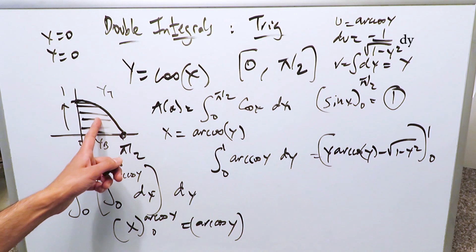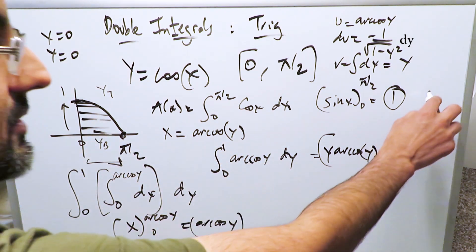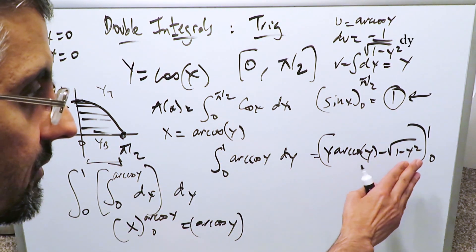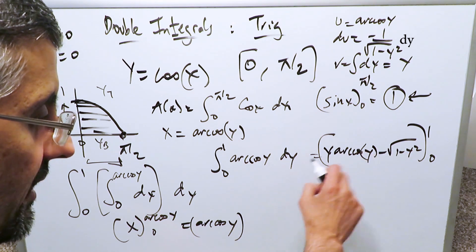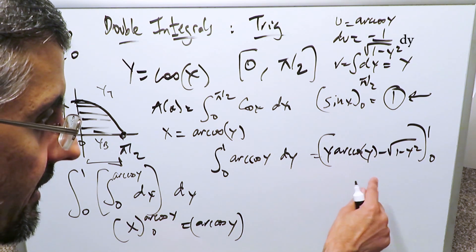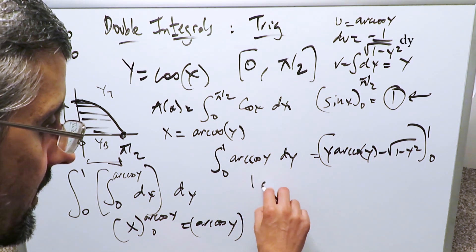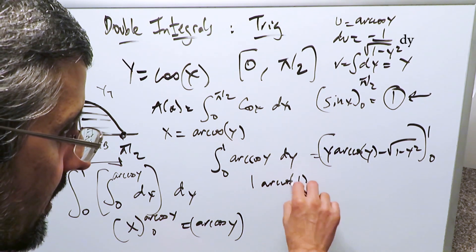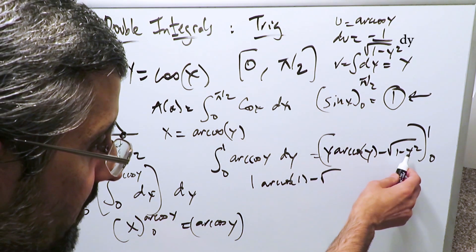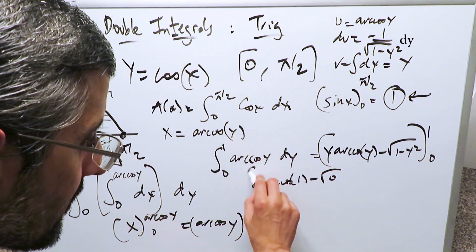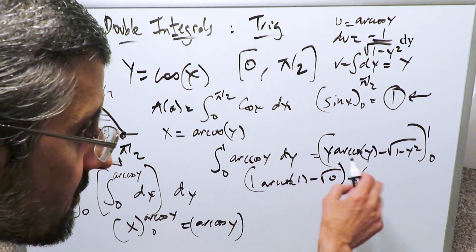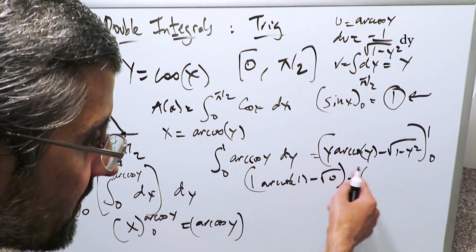That's all we have to evaluate and we'll get this area which should be one. It should be equal to one and it will be. We'll do this properly. We'll do the upper limit entirely, then the lower limit entirely and the difference. We'll have a one arc cosine of one minus square root of one minus one square which is a zero. This is my upper limit coming in. Now let's do zero. Zero times arc cosine of zero.